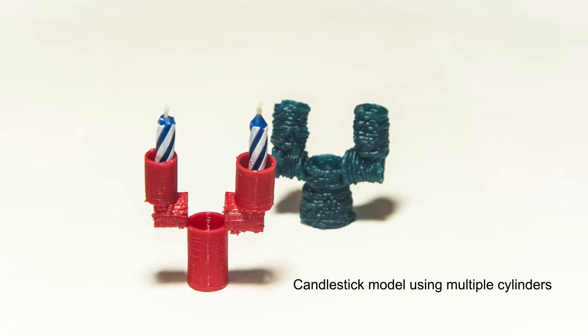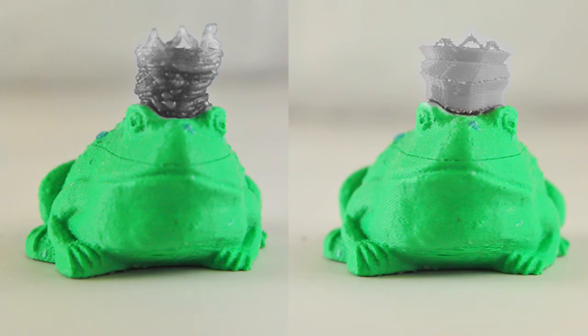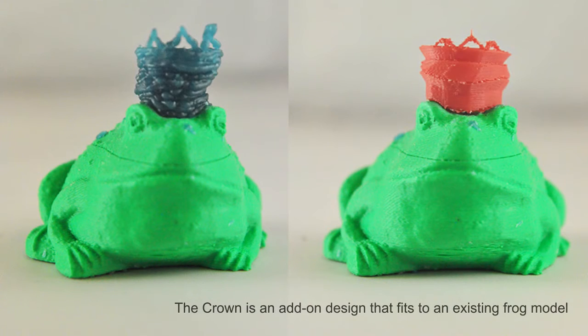Compound models can be made with a succession of components built upon each other, like the candlestick example showcased here. Note that it is not necessary to start a design on the building platform. This makes it possible to design new add-ons to fit an existing model, as illustrated with the crown sitting on top of the frog model.